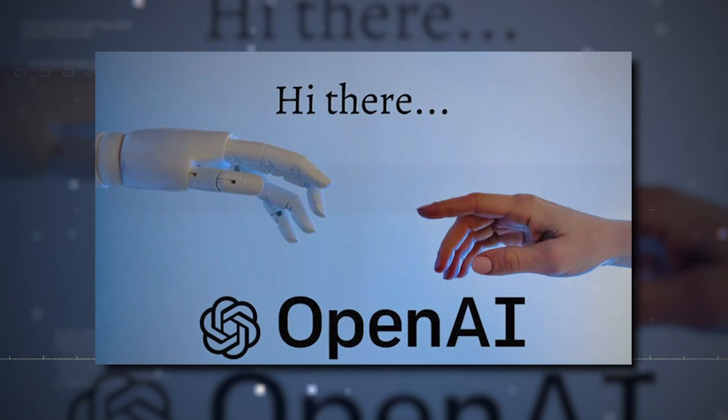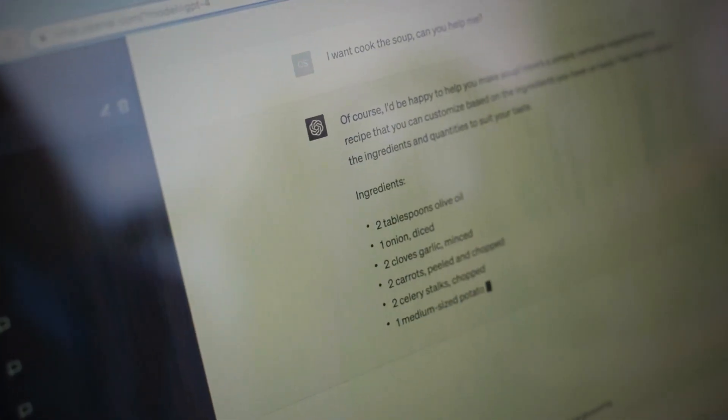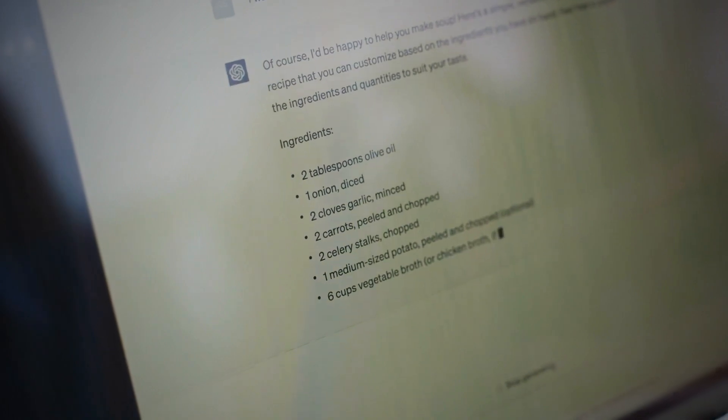He types, Hey ChatGPT, what's Astatine? The answer pops up within seconds, saving Jimmy from a certain F-grade doom.